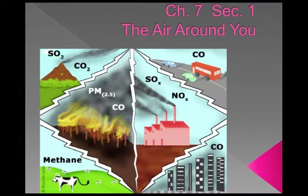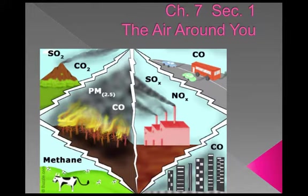Breathing brings air into your lungs where the oxygen you need is taken into your body. But not everything in the air is healthful. You may also breathe tiny particles or even small amounts of harmful gases. The air around you may contain pollutants — harmful substances in the air, water, or soil. Some pollution occurs naturally; for example, forest fires, soil erosion, and dust storms release smoke or dust into the air. The wind carries particles of molds and pollen. Erupting volcanoes spew out clouds of dust and ash along with poisonous gases.